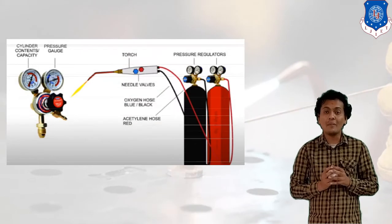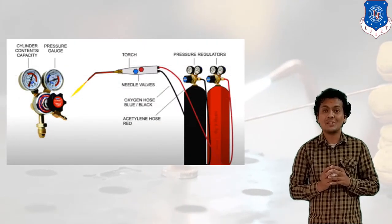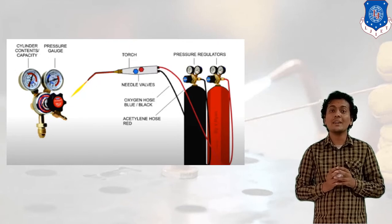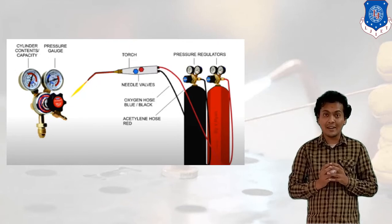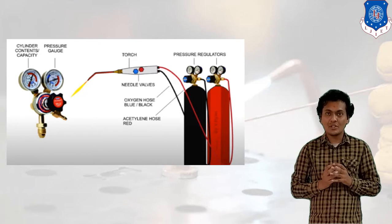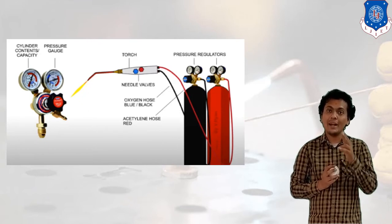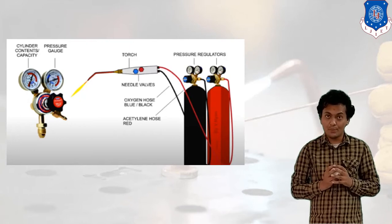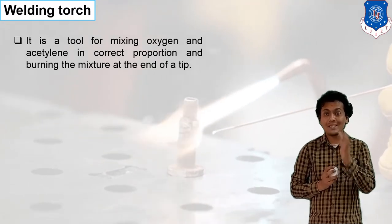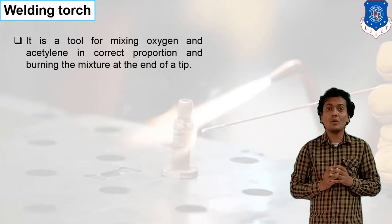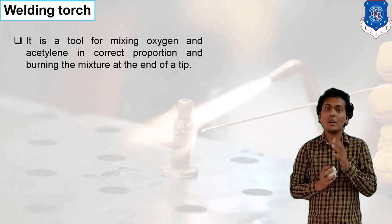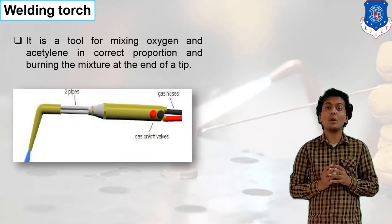Let's look at the general setup for gas welding. Two cylinders — one for oxygen and one for acetylene — are used. The hose pipe, pressure regulator, and welding torch are also shown in this view. The purpose of the welding torch is to mix both gases in a certain proportion and make a flame.